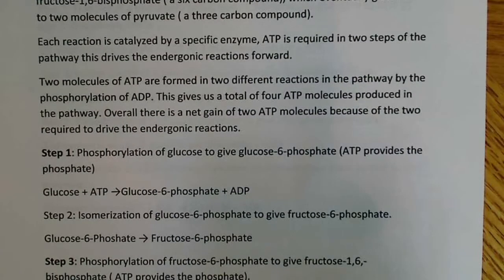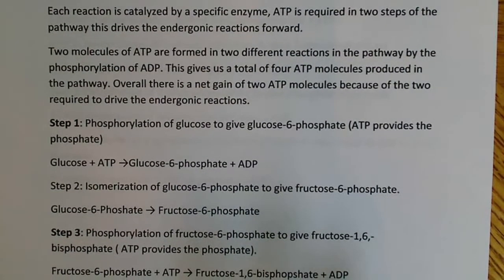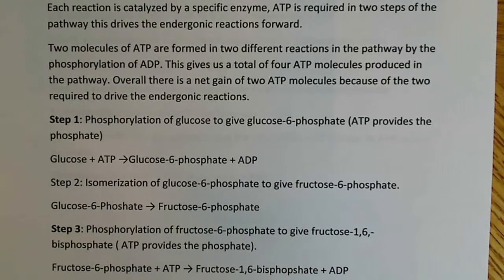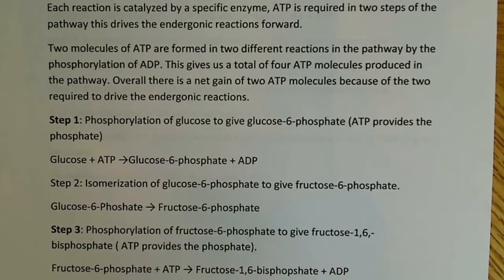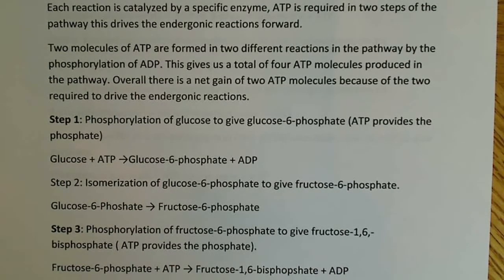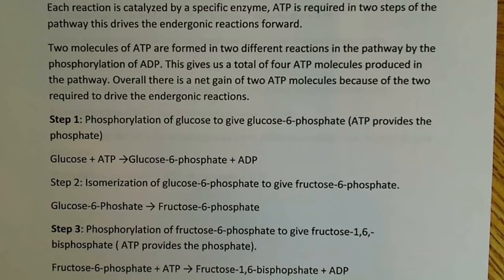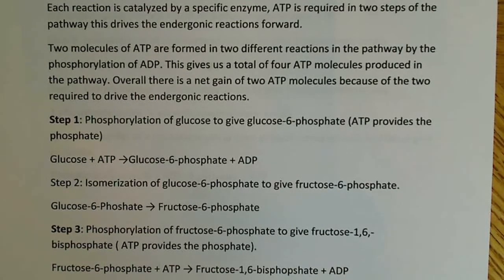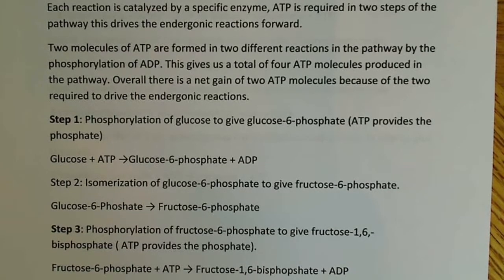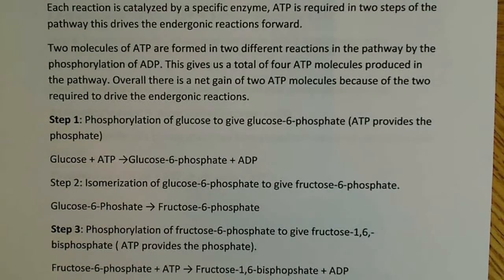Two molecules of ATP are formed in two different reactions in the pathway by phosphorylation of ADP — ADP is getting a phosphate group to form ATP, occurring in two different reactions. That gives us a total of four ATP molecules produced in the pathway. Overall, there's a net gain of two ATP molecules, because it requires two ATP molecules to initiate glycolysis — to drive the endergonic reactions — and the other two are required to drive those reactions.